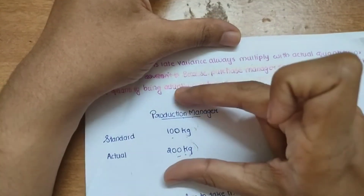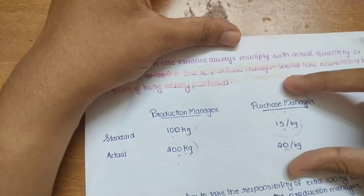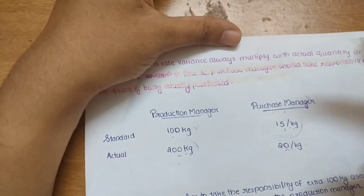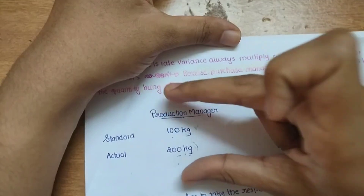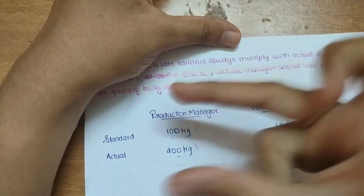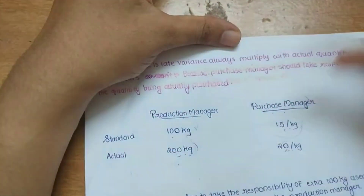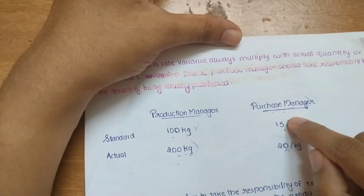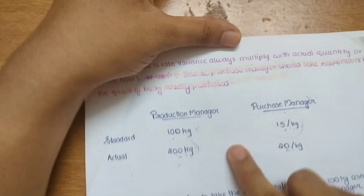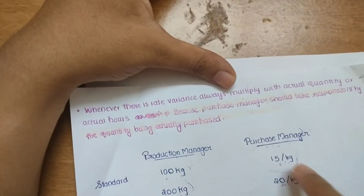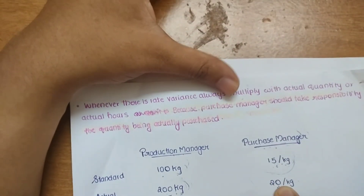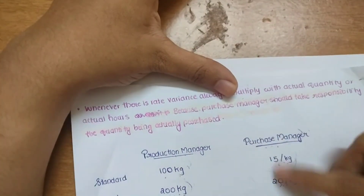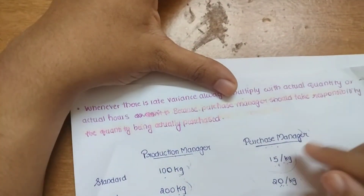The material usage variance is the responsibility of the production manager, and the material price variance is the responsibility of the purchase manager. The purchase manager agreed to buy at 15 rupees per kg but ended up buying at 20 rupees, which is 5 rupees per kg adverse.